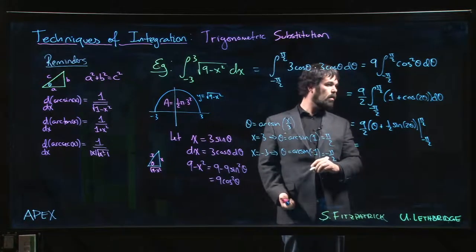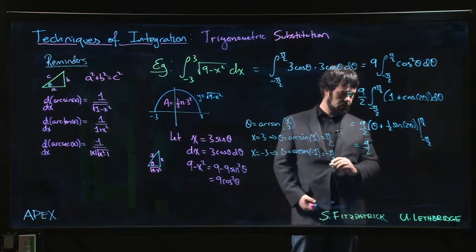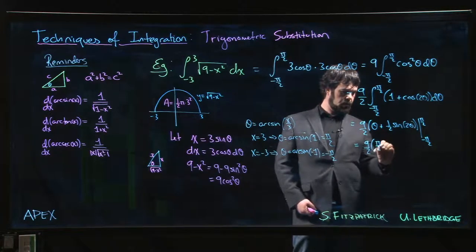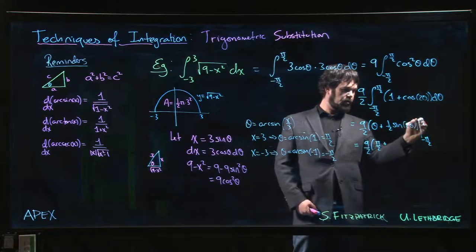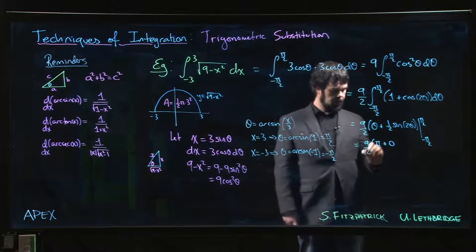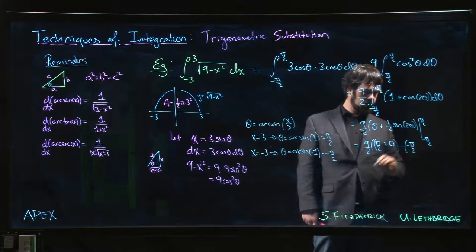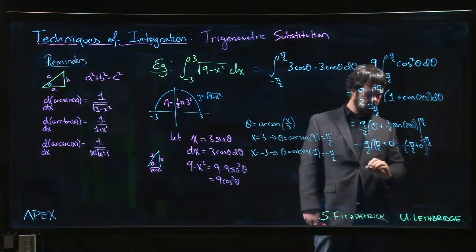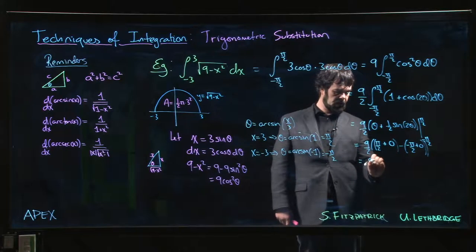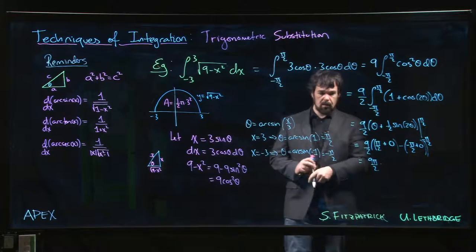Okay, so we're going to get 9 over 2, times pi over 2 plus, so 2 times pi over 2 gives me pi. Sine of pi is 0. There's the upper limit. Lower limit minus pi over 2. Again, 0 minus pi over 2 plus pi. Yeah, so it's pi over 2 plus pi over 2 is pi. So I get 9 pi over 2 as expected. Good. So we're happy about that.